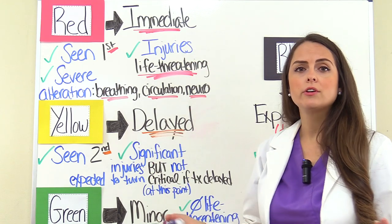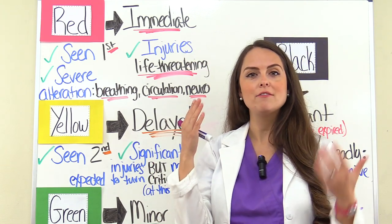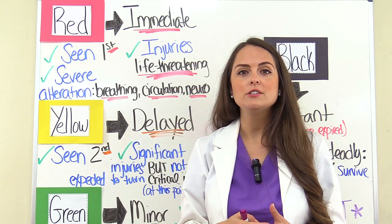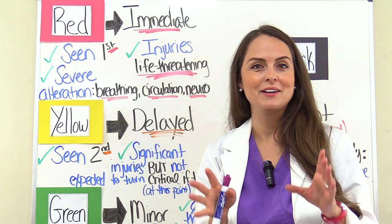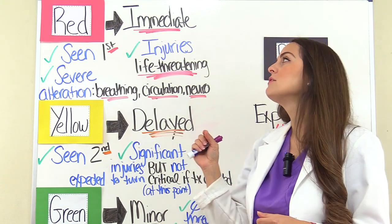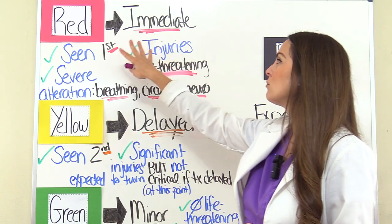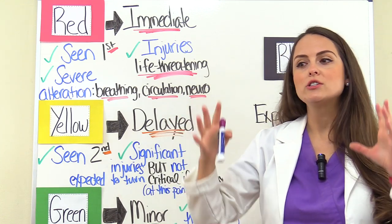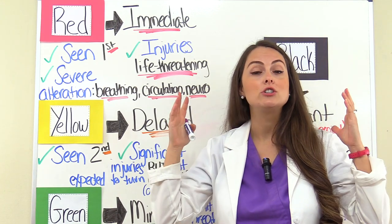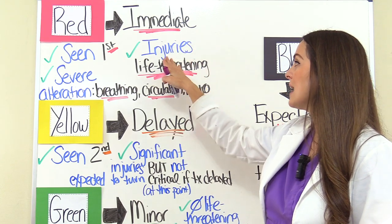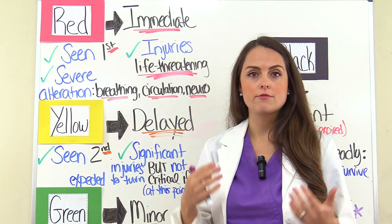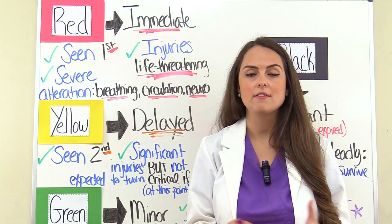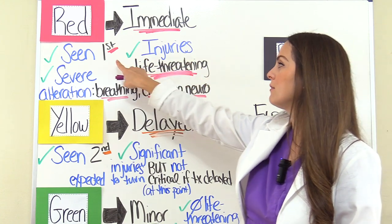These can get a little confusing, so think of a traffic light with red, yellow, and green. What do you do at a red light? You're supposed to stop. So if a patient is tagged red, they are labeled immediate — you need to stop and get that patient treatment, because this patient has injuries that are life-threatening. However, if we get them treatment, they could survive. So they have the highest priority of being seen first.